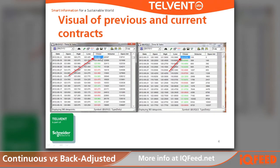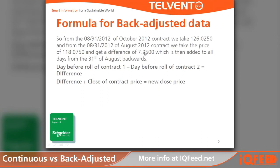We will take these two prices: $126.025 subtracted from $118.075 for a difference of $7.95. This price will then be added to the open, high, low, and close of all the data from August 31st back, to line it up more closely with the October contract, which is now in effect.